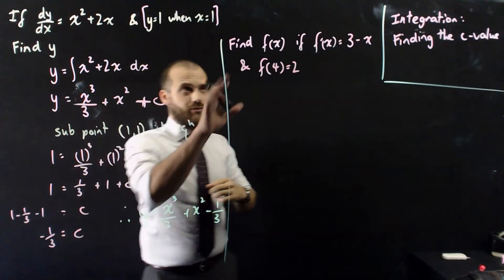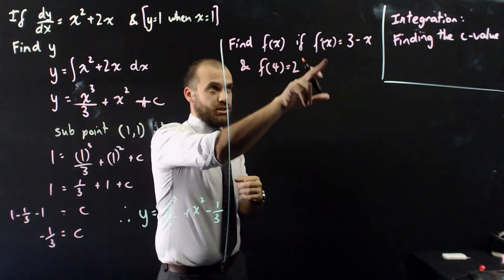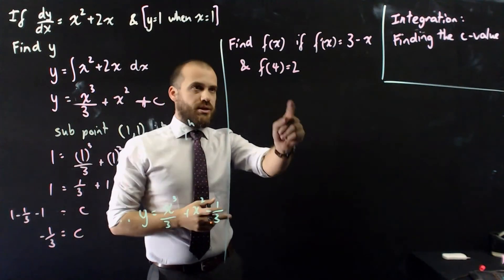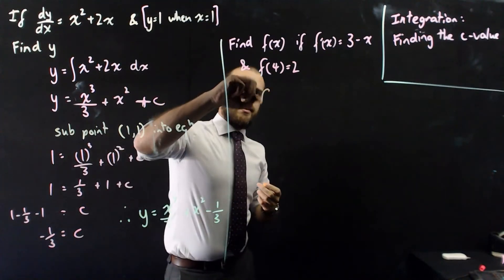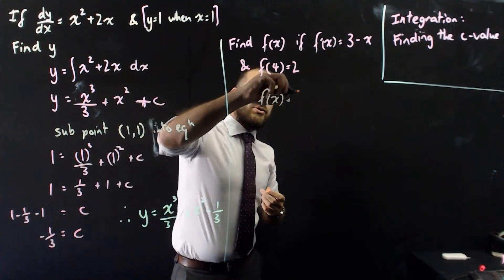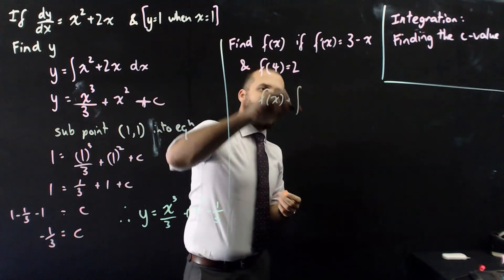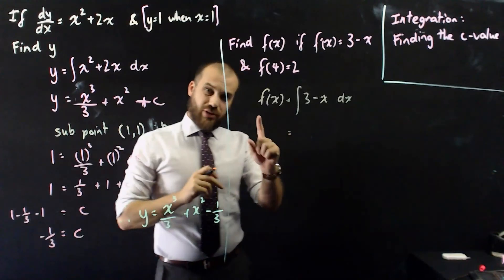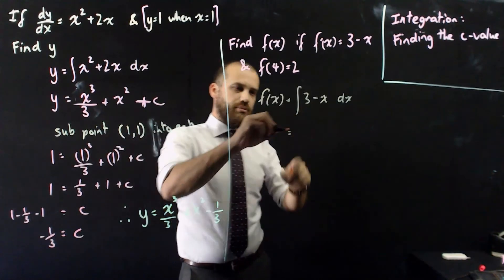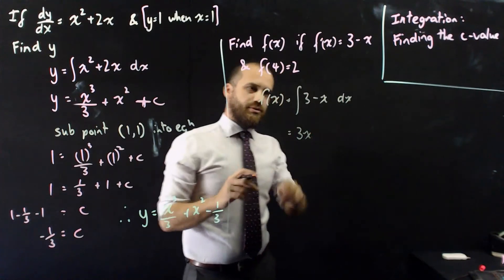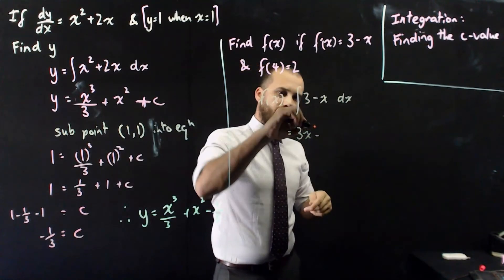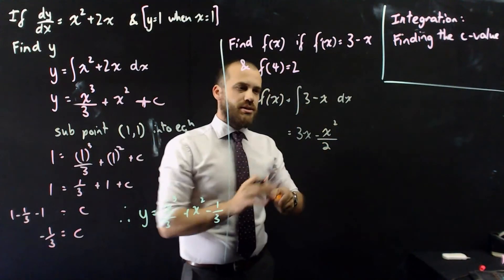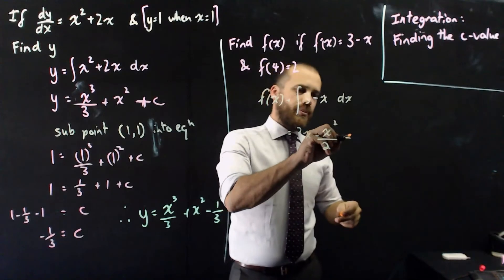Same sort of question, just a different way of writing it. Find f(x) if f'(x) equals 3 minus x, and f(4) equals 2 — meaning when x equals 4, y equals 2. So f(x) equals the integral of 3 minus x with respect to x. Integrating that, the constant becomes 3x, then negative x squared over 2 — increase the power by 1 to get 2, divide by 2 — and don't forget plus c.